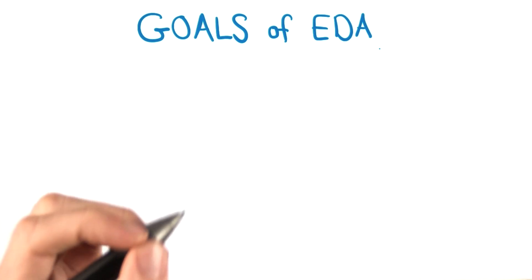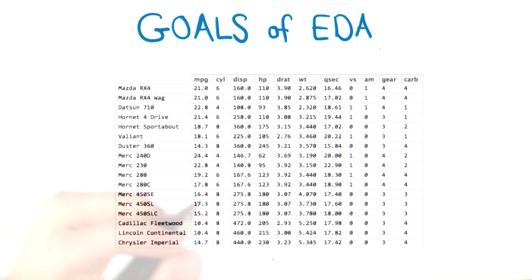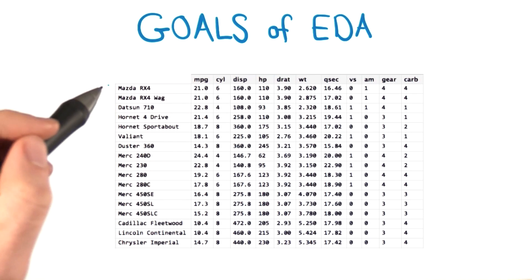Think of EDA as your initial interaction with data. For example, let's say we wanted to look at a set of cars. This data comes from the MT cars dataset, which comes with R Studio.